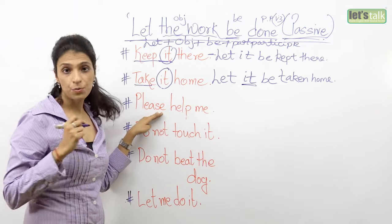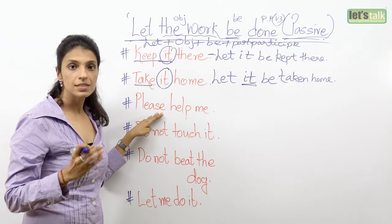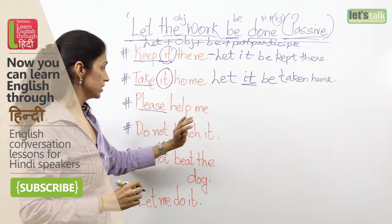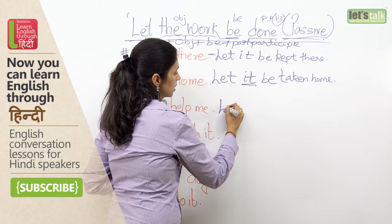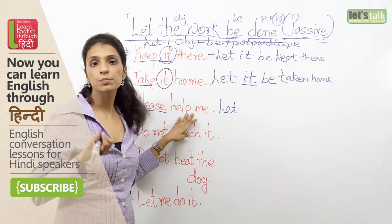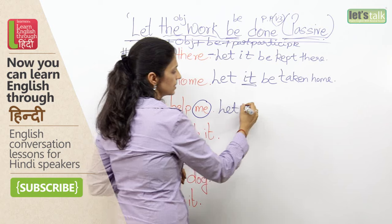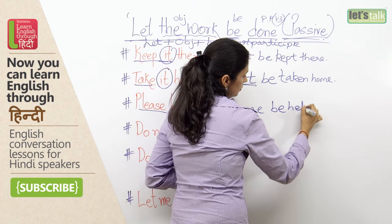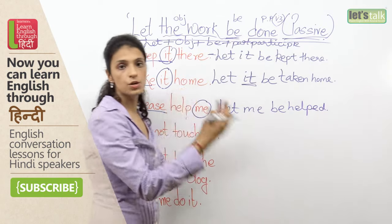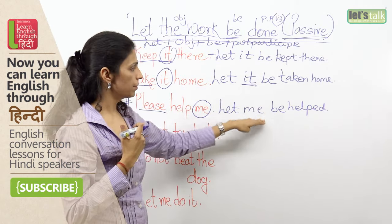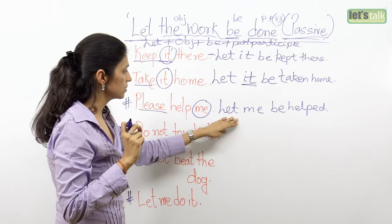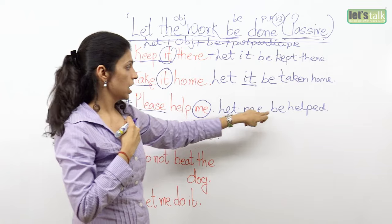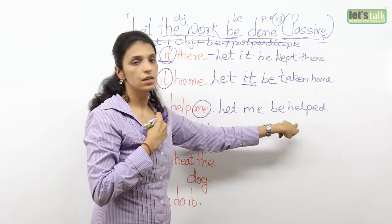Next: 'Please help me.' This is a request — it's an imperative sentence because of the word 'please.' In passive voice you are not going to use 'please.' Ask 'help who?' — the object is 'me.' So: 'Let me be helped.' The action is done on me. I have followed the same sequence: 'let' with the object 'me,' then 'be,' then the verb in the past participle — 'be helped.'